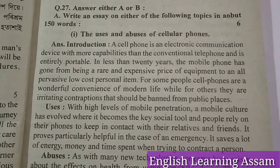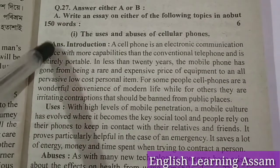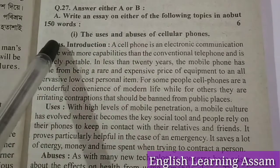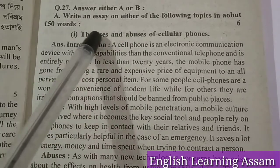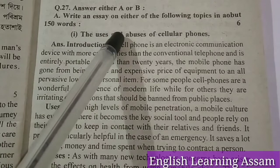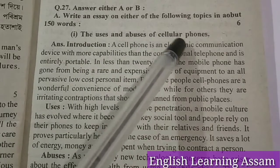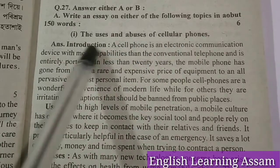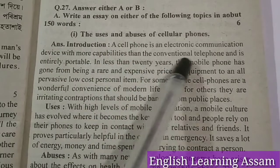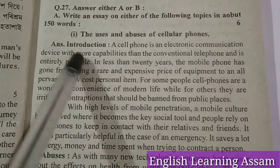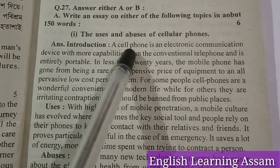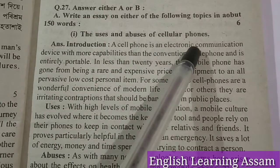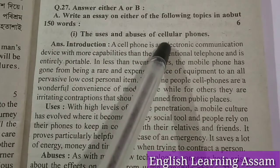Now come to question number 27: answer either A or B. A — write an essay on either of the following topics in about 150 words, 6 marks. Number 1: the uses and abuses of cellular phones, that is, mobile phones.